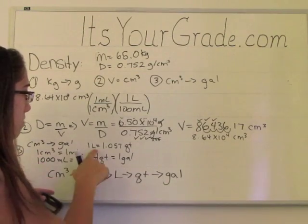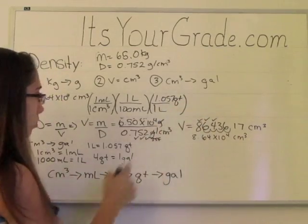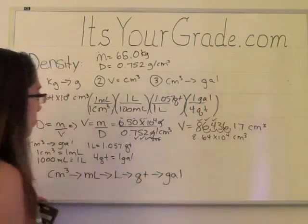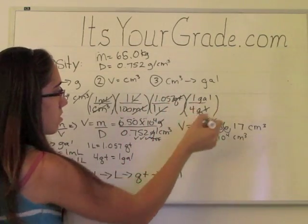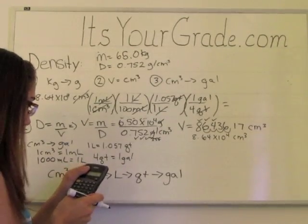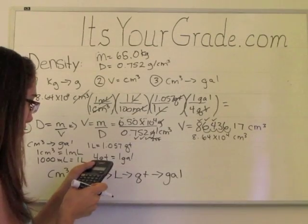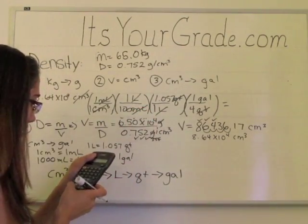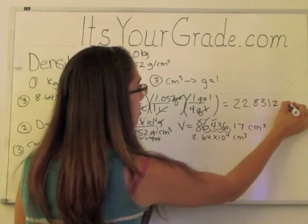Liters will now need to go on bottom, so 1 liter and 1.057 quarts on top. Quarts will need to go on the bottom, so 4 quarts is equal to 1 gallon. So if you notice centimeters cubed cancel, the milliliters cancel, the liter cancels, the quarts cancel, and we're left with gallons, which is what we want. So let's punch this big thing on the calculator. 8.64 times 10 to the 4th times 1, times 1.057 divided by 1,000 divided by 4. This equals 22.8312 gallons.